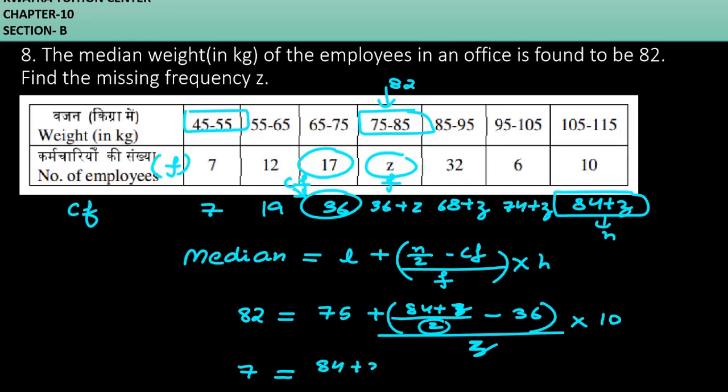This will be 84 plus Z minus 72, and 2 in multiplication with Z into 10. So 2 and 10 can be cancelled, giving you 5. On the left side you have 7, and 84 minus 72 is 12. So 12 plus Z divided by Z into 5.